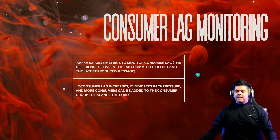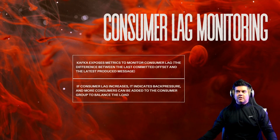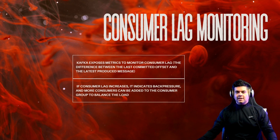The second mechanism is consumer lag monitoring. Kafka exposes metrics to monitor consumer lag, which is the difference between the last committed offset and the latest produced message. If consumer lag increases, it indicates backpressure, and more consumers can be added to the consumer group to balance the load.